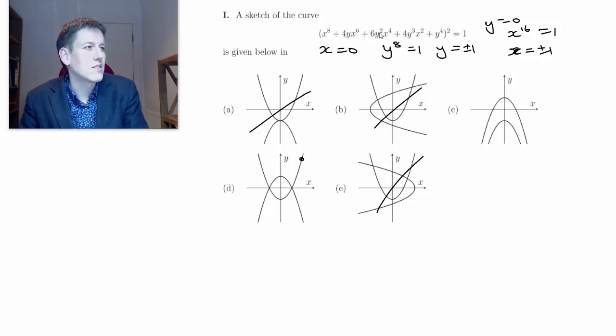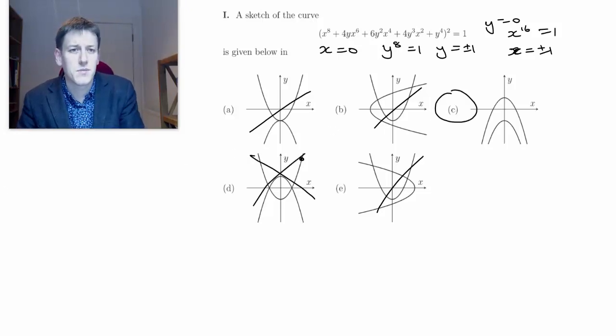Well if I take X and Y both to be bigger than one here, all of these terms are going to be bigger than one so I've got something squared squared I get something larger than one so it's not going to be equal to one. So actually really this graph can't have any points in this large X Y region so it can't be D and then it must be C.